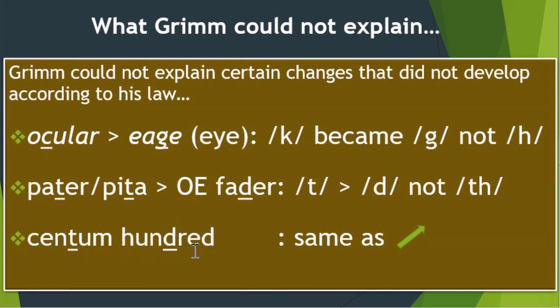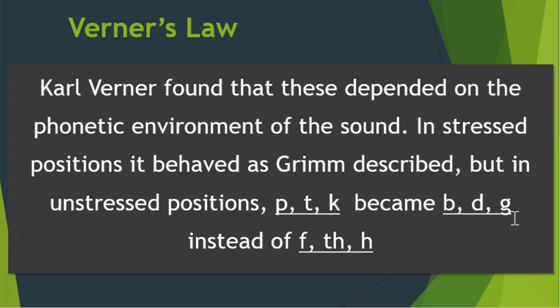This is a problem — something that troubled Grimm and other philologists, something that did not seem to fit into the set of explanations codified under Grimm's Law. An explanation to this was given by a Danish philologist named Karl Werner, which we call today Werner's Law.